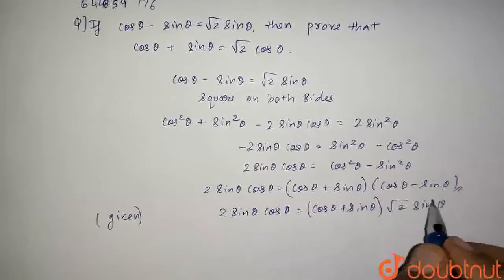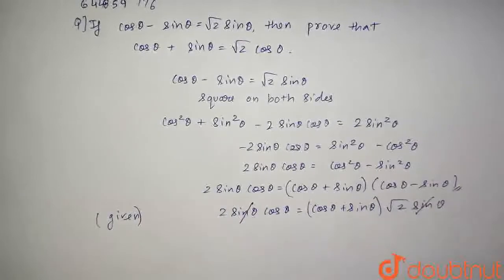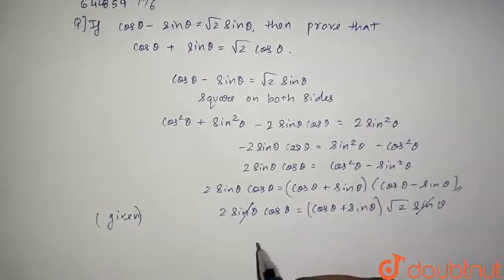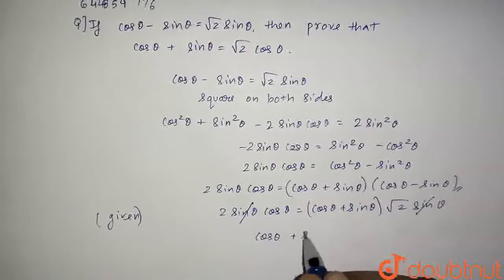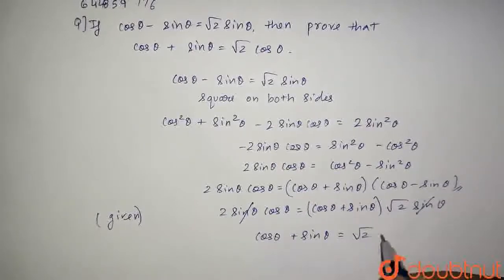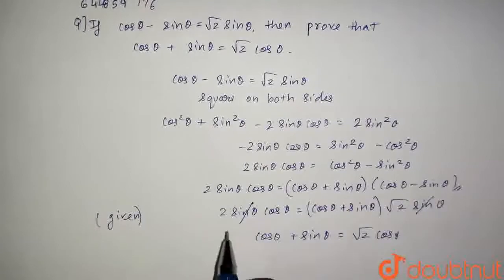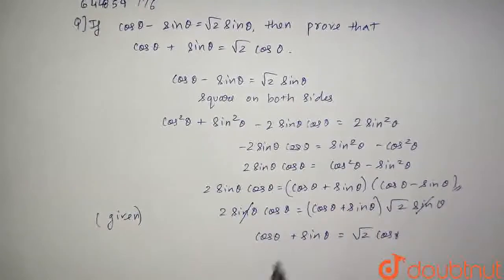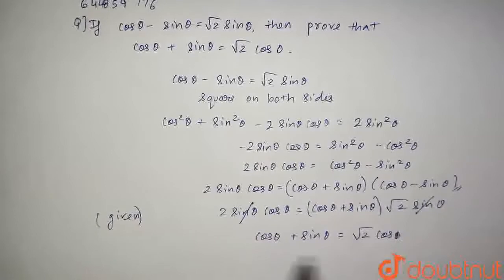So now, I will just cancel sin θ and sin θ and we will be left with cos θ plus sin θ is equal to root 2 cos θ, because root 2 will come below. So therefore, it will be root 2 cos θ.